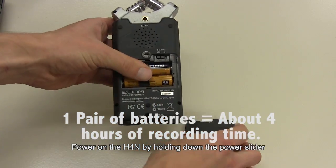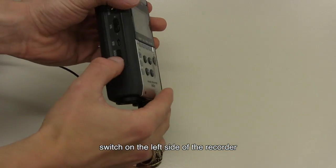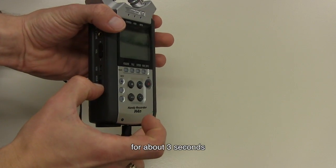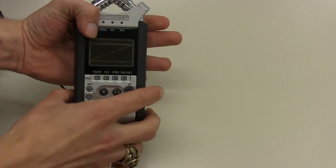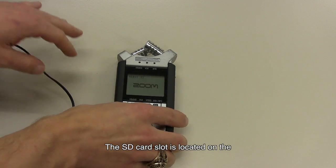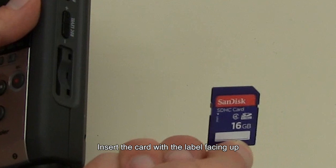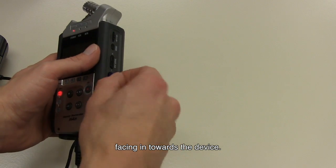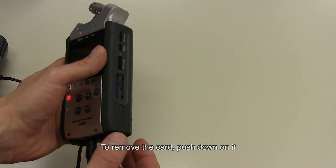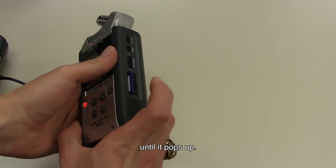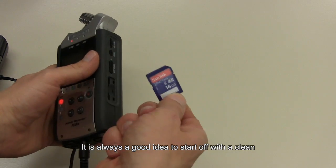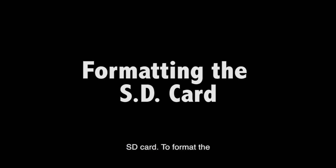Power on the H4n by holding down the power slider switch on the left side of the recorder for about three seconds. The SD card slot is located on the right side of the device. Insert the card with the label facing up and the cut corner on the right side facing in towards the device. To remove the card, push down on it until it pops up. It is always a good idea to start off with a clean SD card.